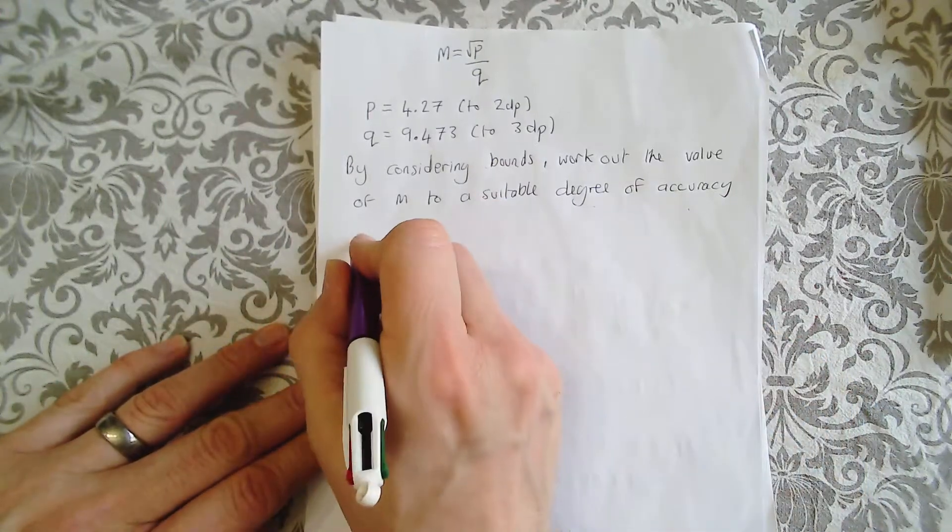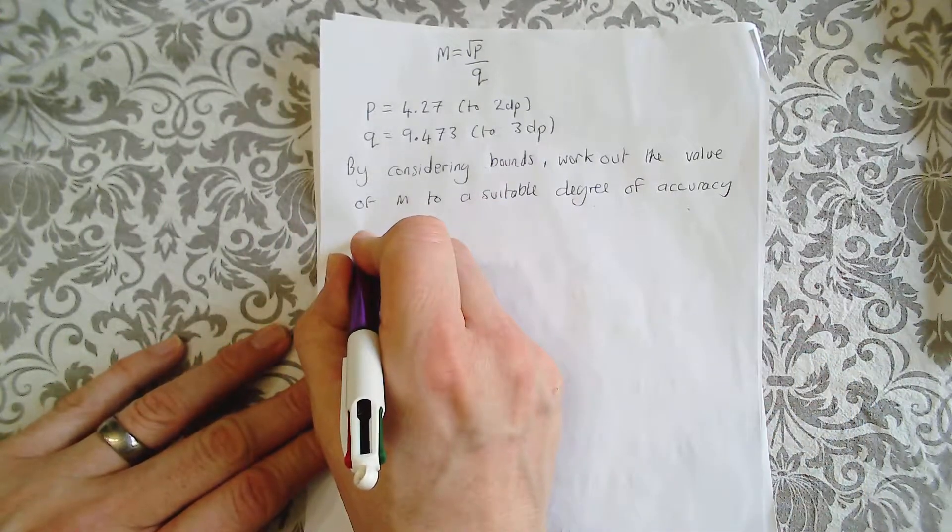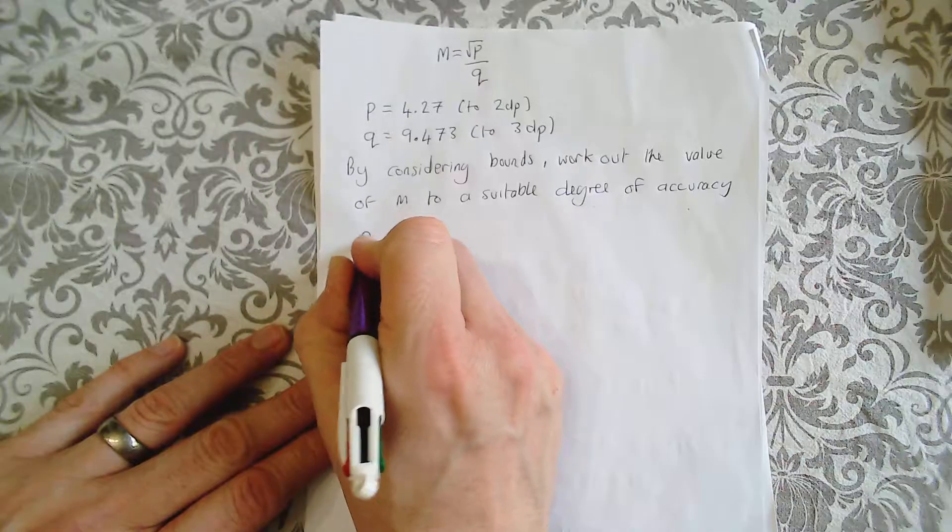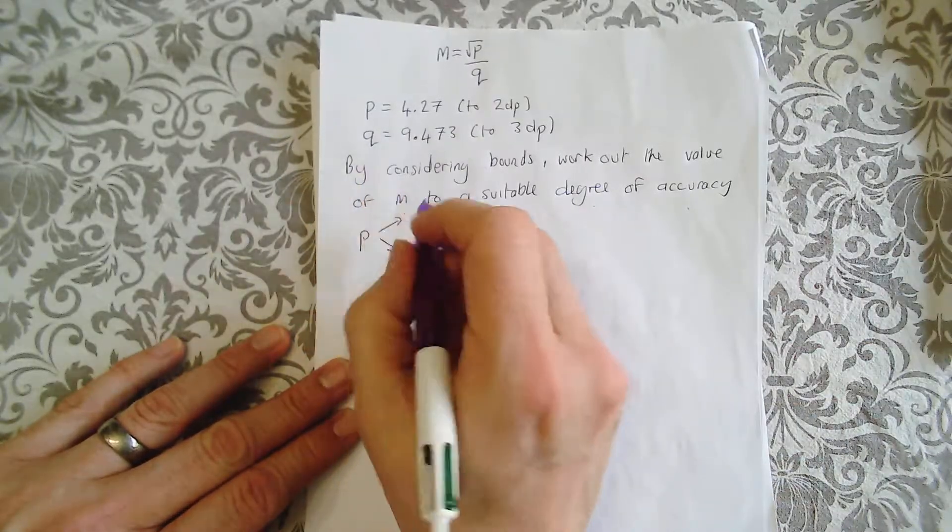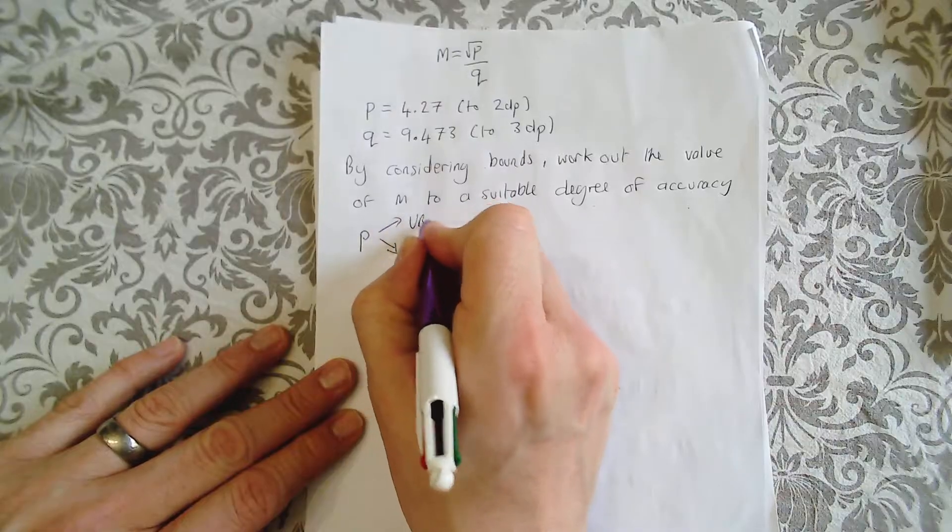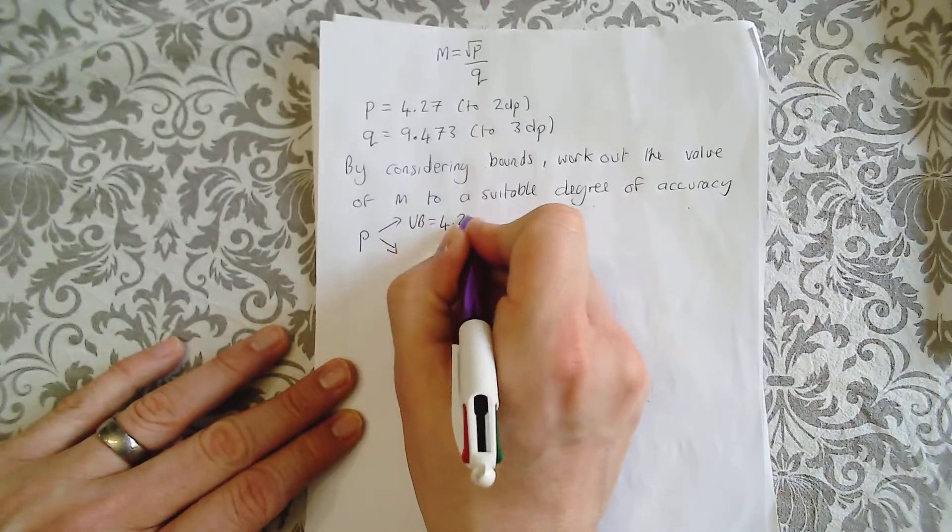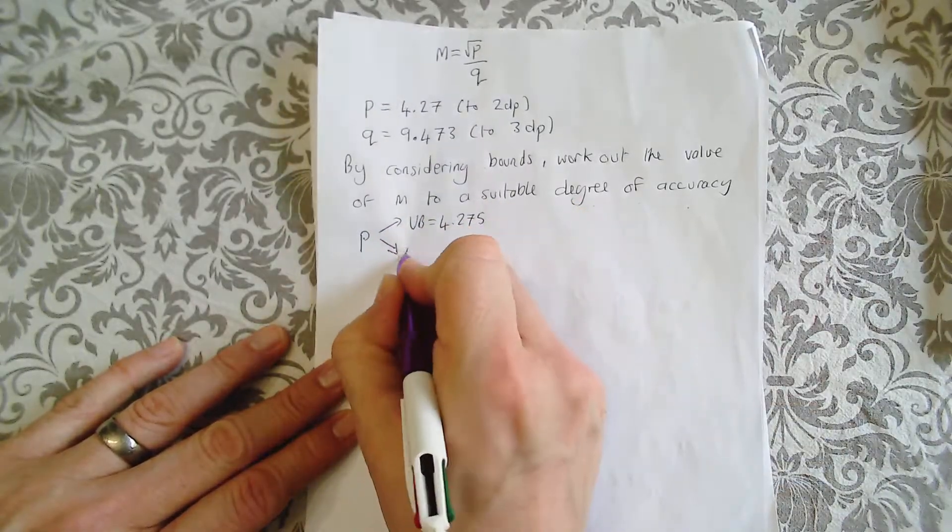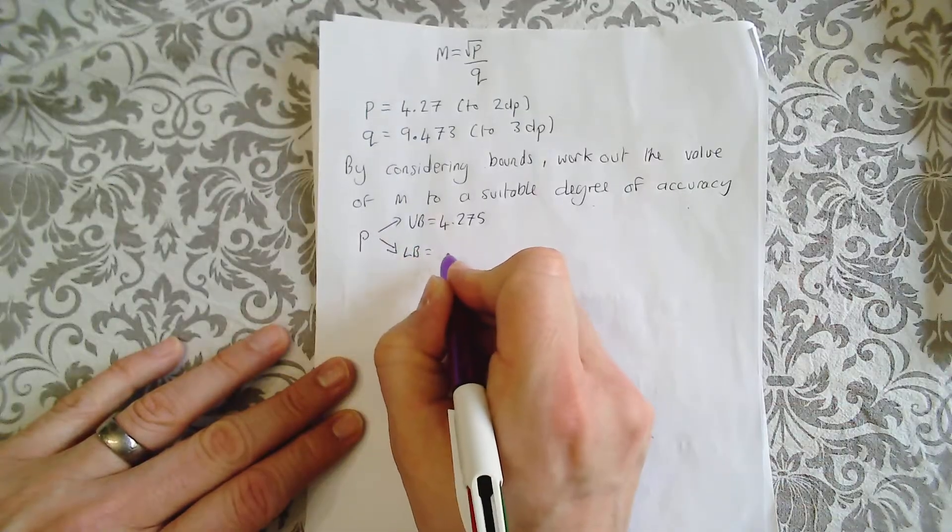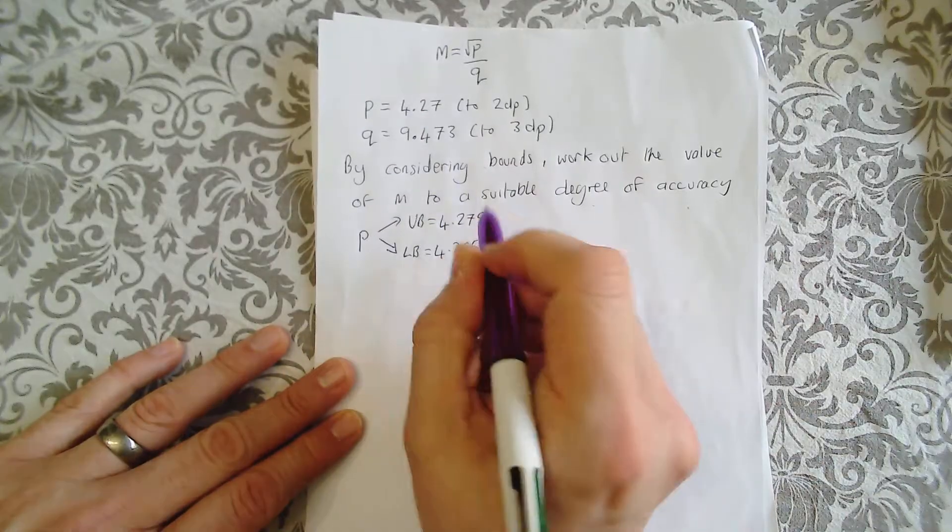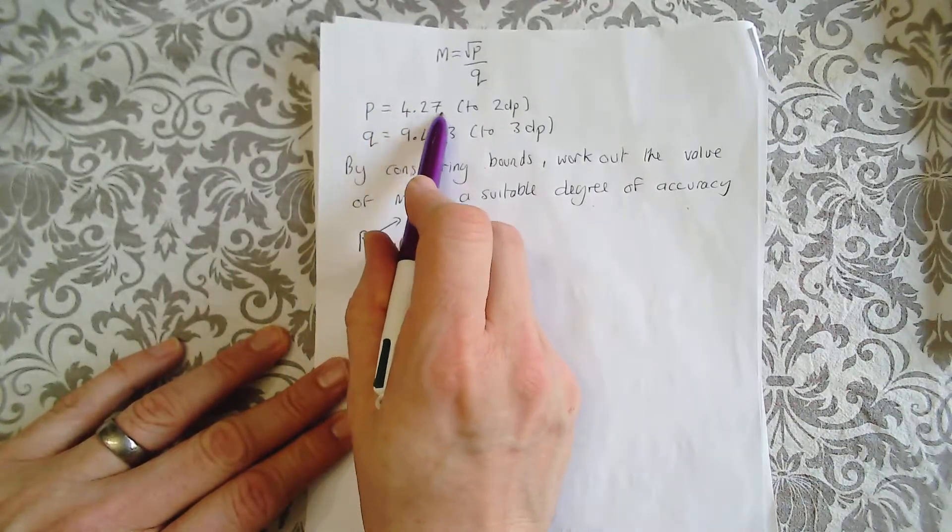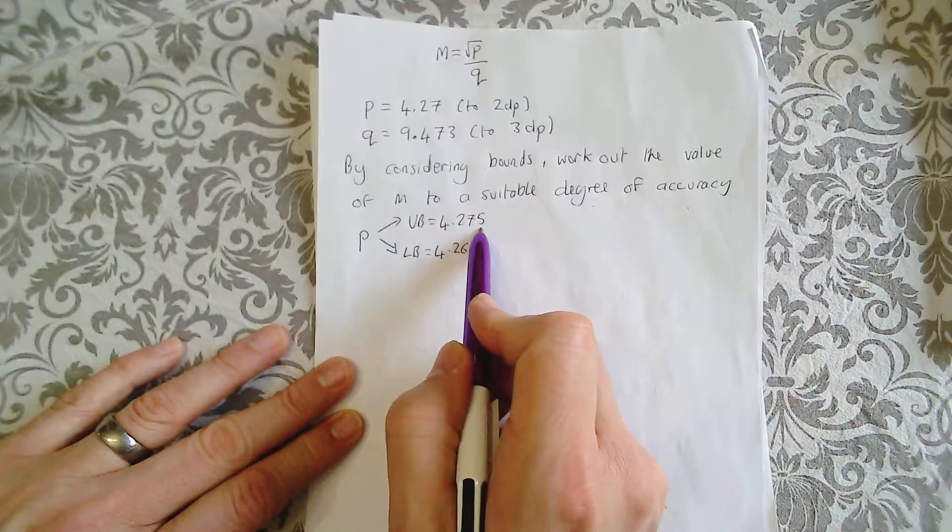With this, your first step is to work out the upper bound and lower bound of each variable. So P, upper bound of P is 4.275. Lower bound of P is 4.265. That's two decimal places, so this is to three decimal places.